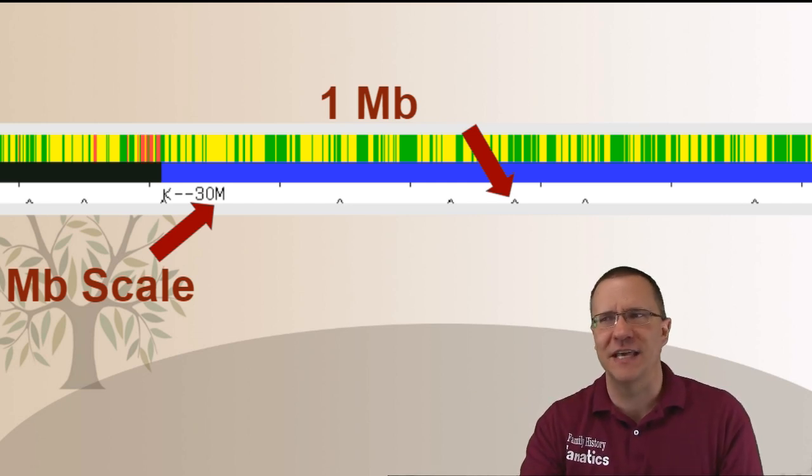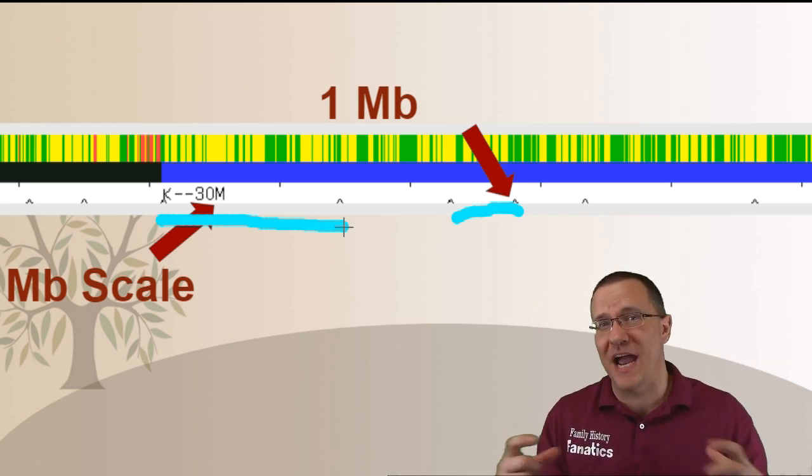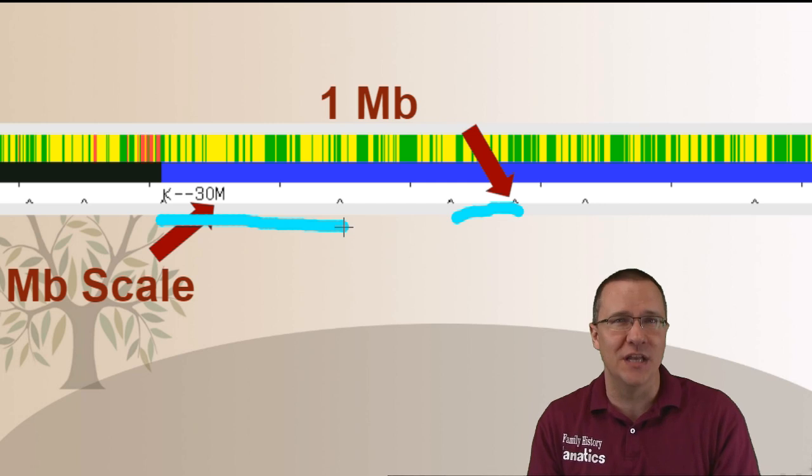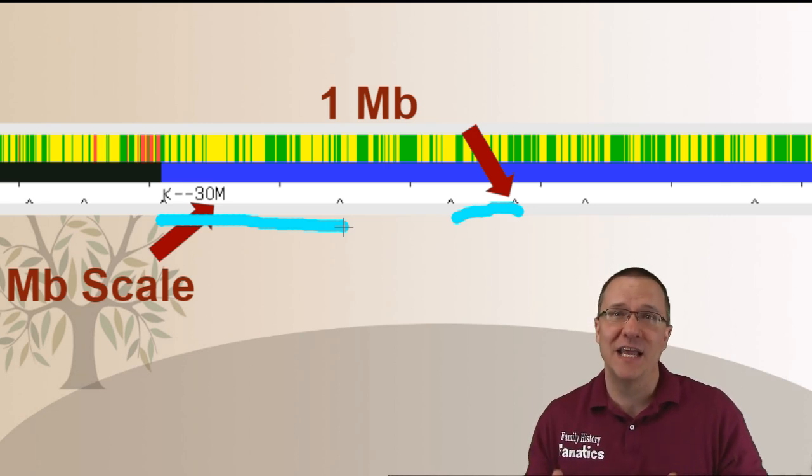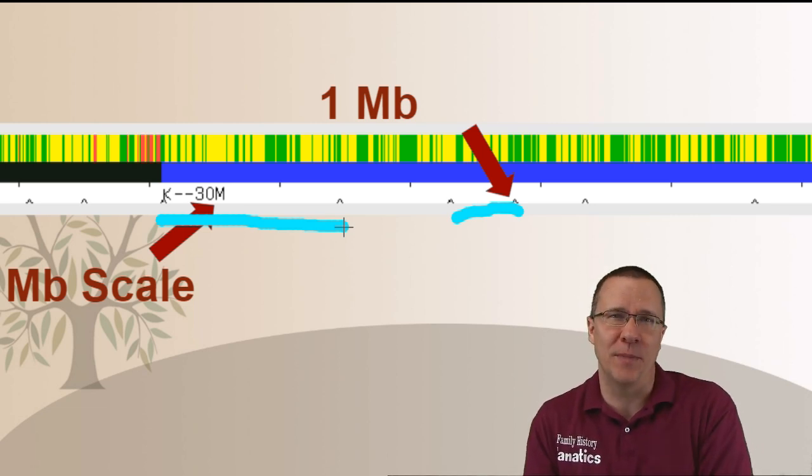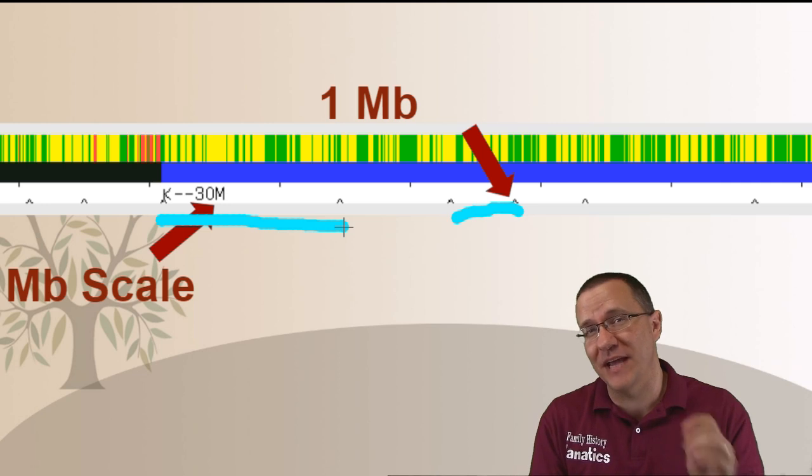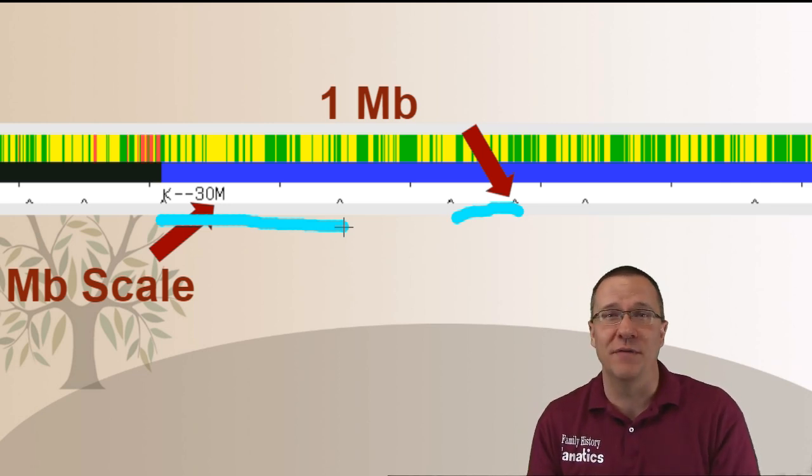What you can also see is that the actual length between any two of these marks is a little bit different. There's some of these that are shorter like this one and there's some of them that are longer like this one and again that's because the graphic is sized based on the number of SNPs but this bottom scale is the megabases and so in some places there's more SNPs per megabase and in other places there's fewer SNPs per megabase. That's why you're seeing the variation in the size of the gap between any two of those carats.